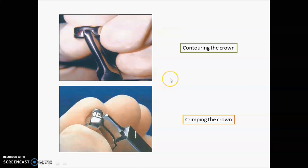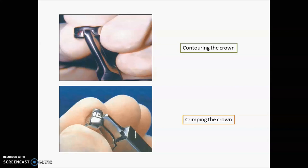In pediatric dentistry we have preformed crowns known as stainless steel crowns. There are two important steps and two important pliers: the contouring pliers and the crimping pliers. We do the contouring and crimping of the crown at the last step to achieve proper gingival fit. This ensures the gingival margin is properly adapted to the crown, protecting gingival tissue and providing mechanical retention.